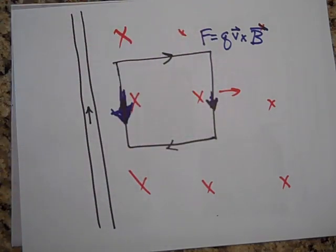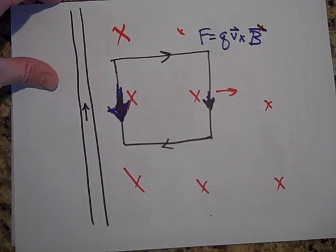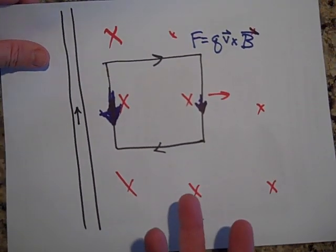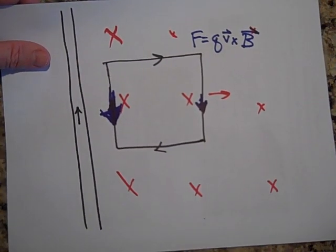Now, you might be thinking, well, I'm always going to go with QV cross B. Do I ever really need Lenz's Law? Actually, I think Lenz's Law is easier to figure out anyways.